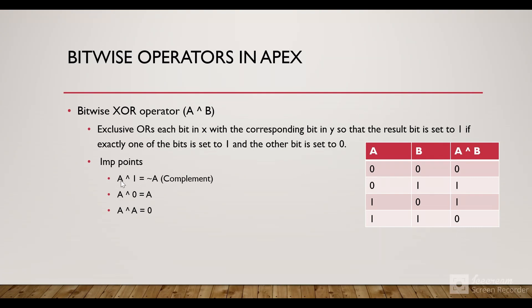Some important points of the XOR operator: if we XOR a number by 1, it returns its complement. We can see that if we are XORing 0 by 1, the result is 1 — that is the complement of 0. Since we are talking about binary language, the opposite of 0 would be 1 and the opposite of 1 would be 0. If we XOR a number by 0, then it is the same number itself. And if we XOR two same numbers, the result would be 0.